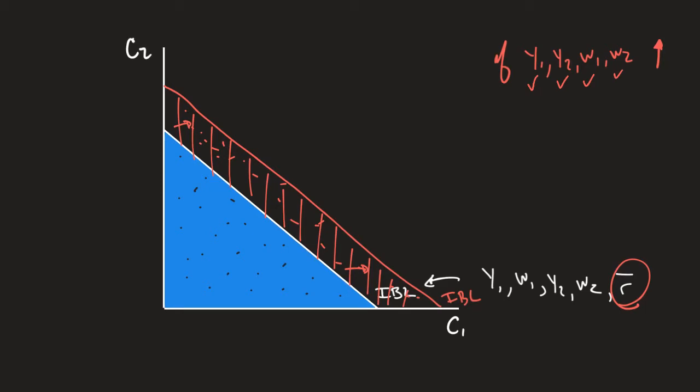Now, what about the opposite? What happens if instead we see Y1, Y2, W1, or W2 decrease? Well, we're losing resources. That's going to shift inward.